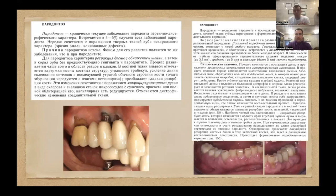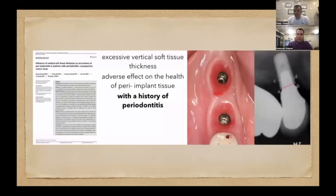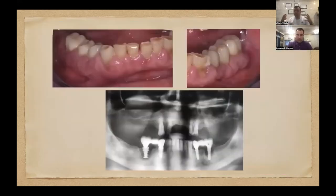Слева можете видеть пациента, у которого оголённые витки резьбы, но при этом стойкая ремиссия. А справа резьба под десной, но посмотрите — какой экссудат гипертрофии. Характер рентгеновской флоры: она очень резко патогенная, быстрая, уничтожает имплантат очень быстро, при том что резьбы во рту нет.